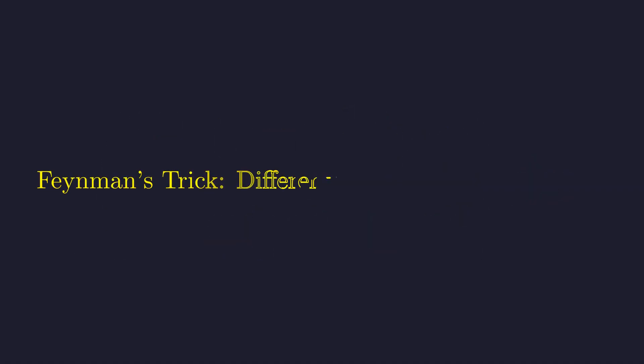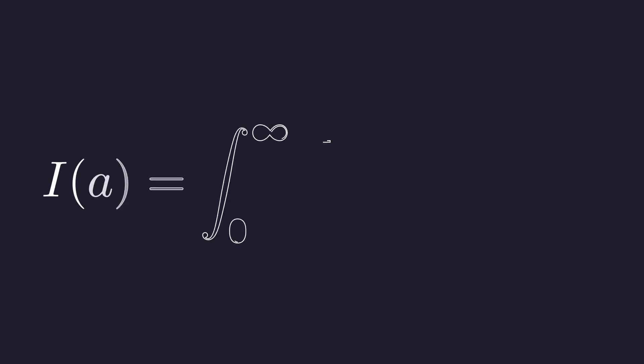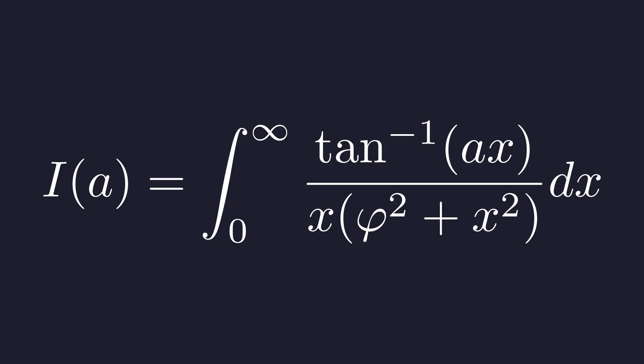The strategy is to use Feynman's trick. We'll introduce a new parameter, differentiate the entire integral with respect to it, solve the simpler resulting integral, and then integrate back. Let's define a function I of A by replacing the parameter phi in the arctangent with a new variable A. Our ultimate goal is to find the value of I of phi.